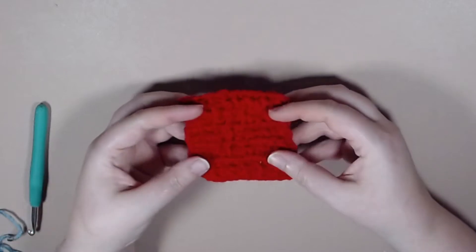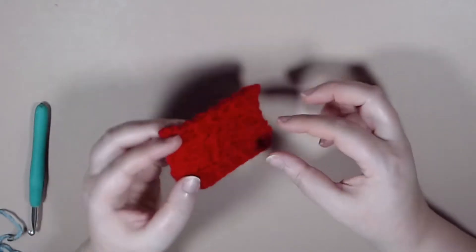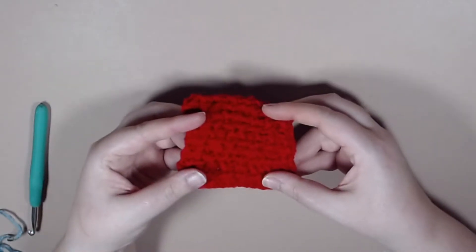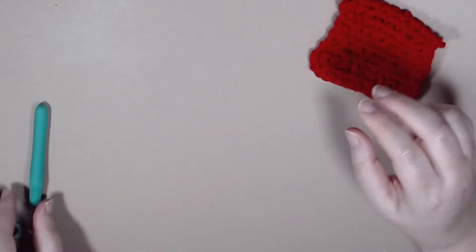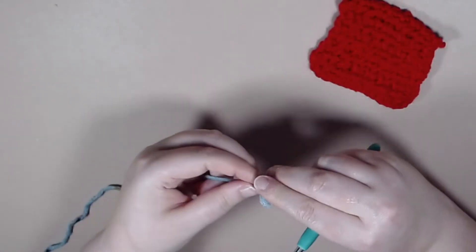Welcome to the Celtic Llama. In today's tutorial I'll be showing you how to do the single crochet post rows stitch pattern. For this pattern you're just going to need to know how to do a single crochet.